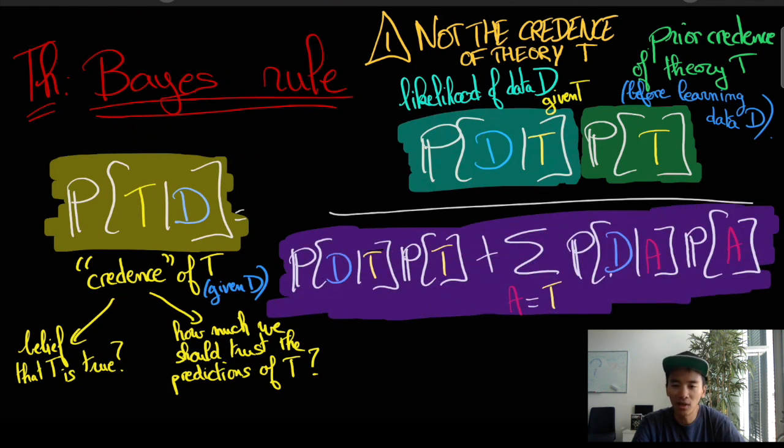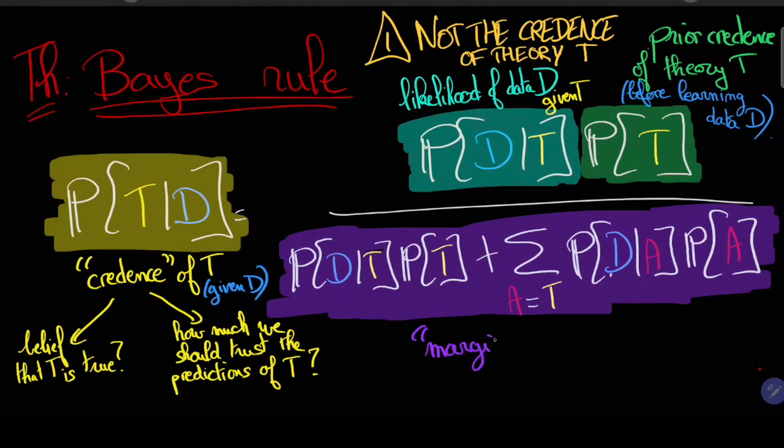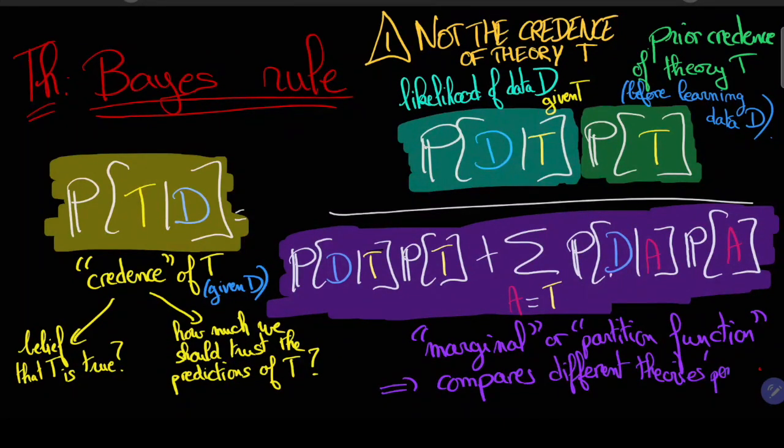And finally you have this term in the denominator which is called the marginal or sometimes it's called the partition function and basically it is a way to get the theory T to compete with alternative theories A.